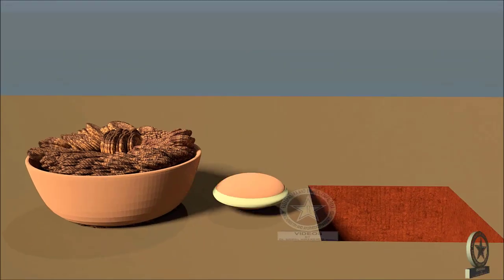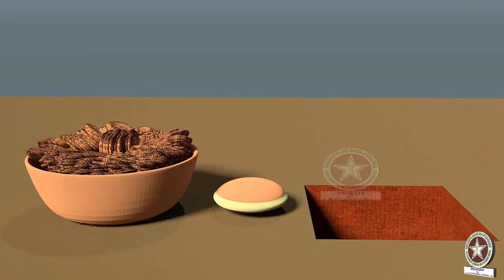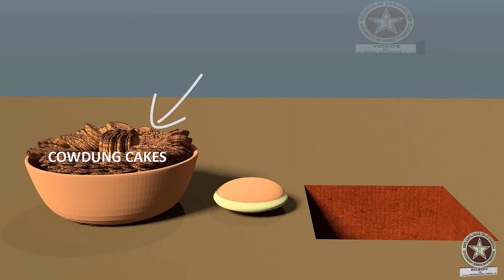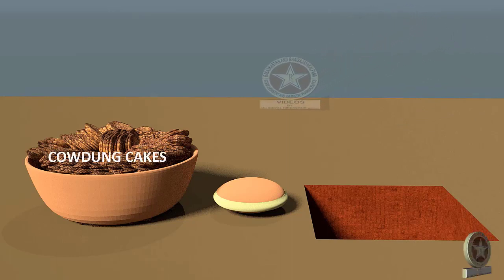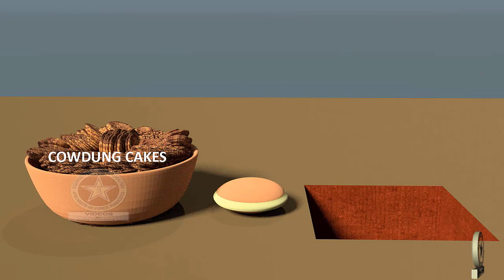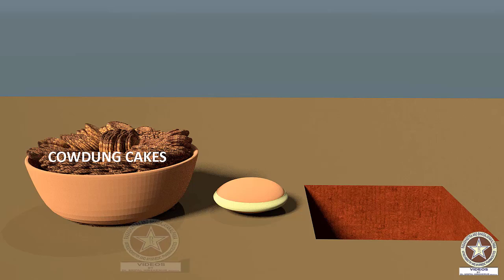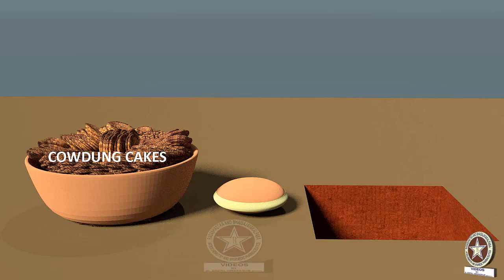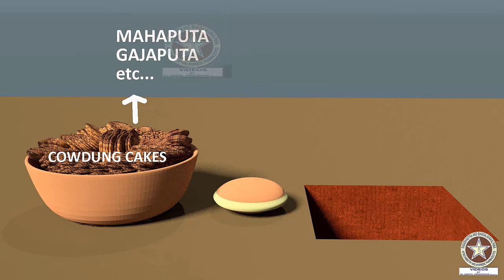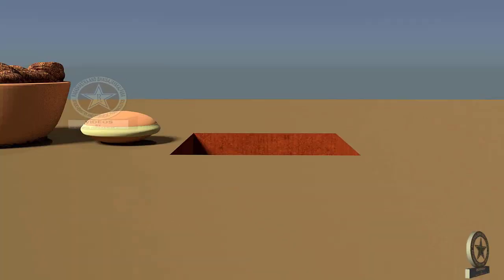Next comes the main procedure — Putta or Agni Samyoga. After Sandibandhana and drying of the Sharava Samputa, it is subjected to a measured amount of heat using Vanopalas or other fuels such as wood, coal, dried grass, or Tusha. There are many types of Putta explained using Vanopalas — including Maha Putta and Gajaputa — which will be dealt with in detail in coming videos.